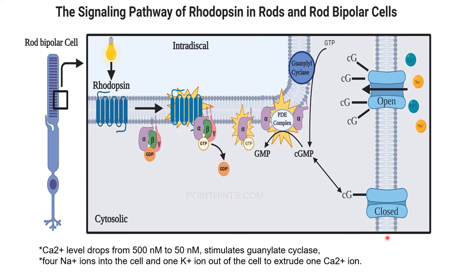If the cGMP-dependent channel closes, there is no ion influx into the cell — no entry of sodium and calcium. For every sodium ion influx, there is an efflux of one potassium ion and one calcium ion. After the cGMP channel closes, the potassium channel opens to hyperpolarize the cell membrane, and calcium ions also exit via their own slow channels.